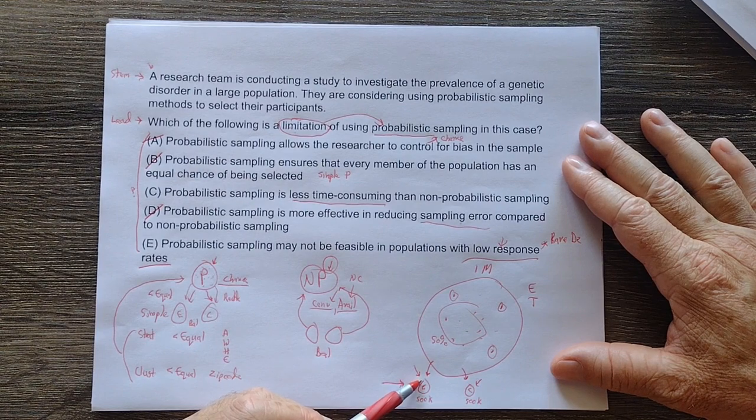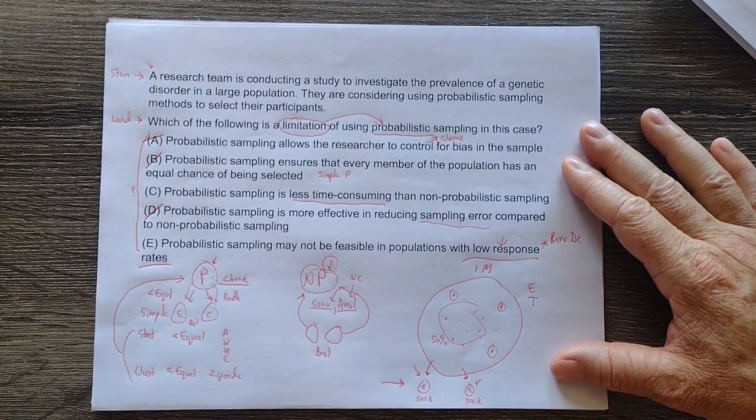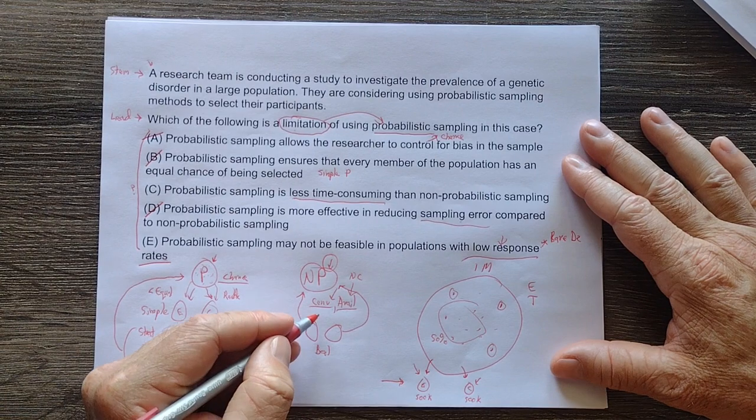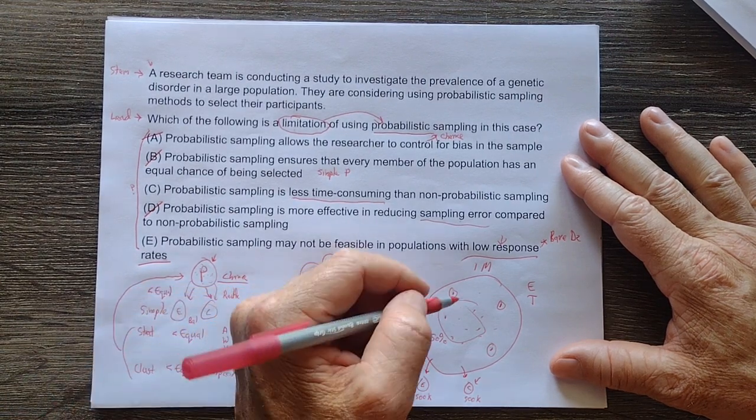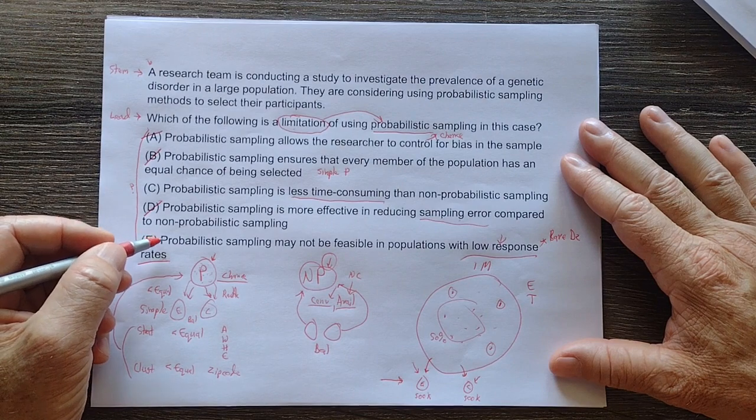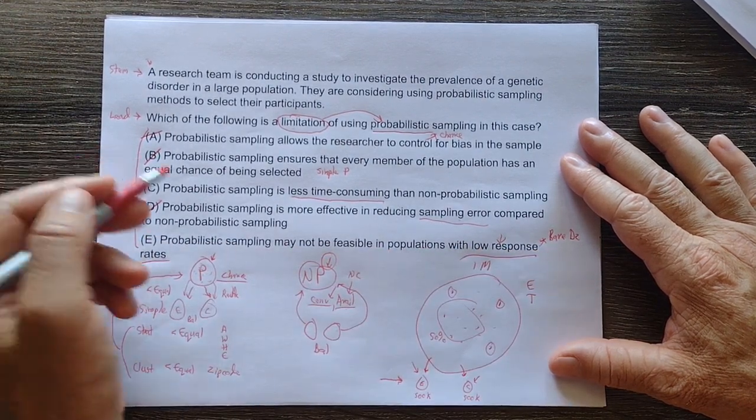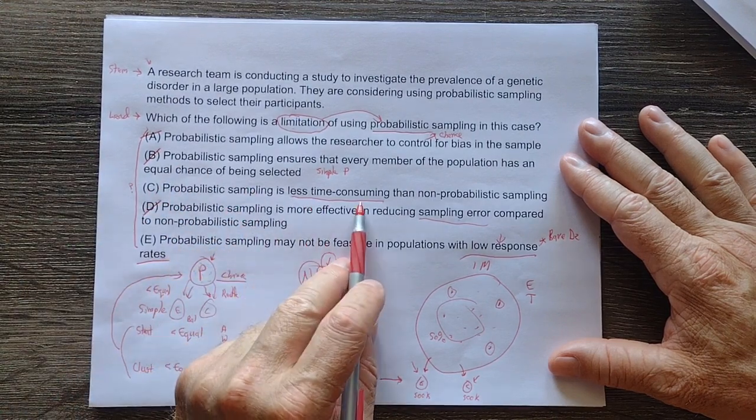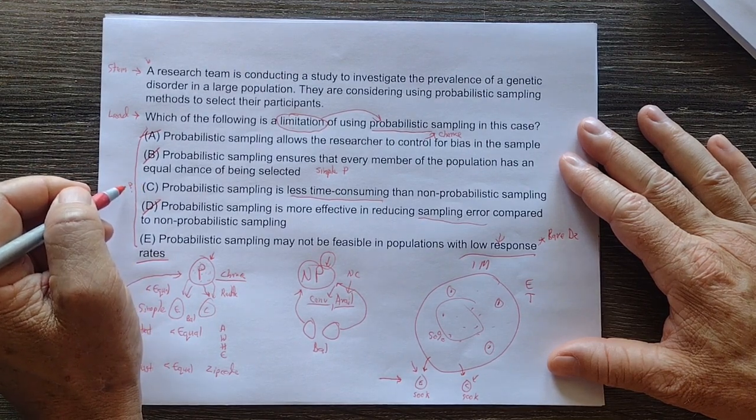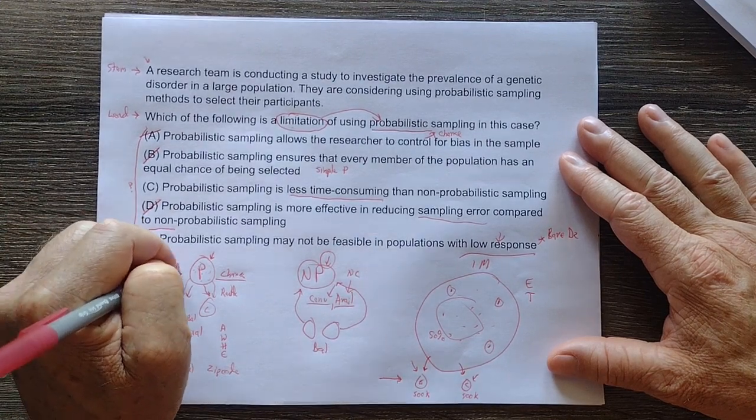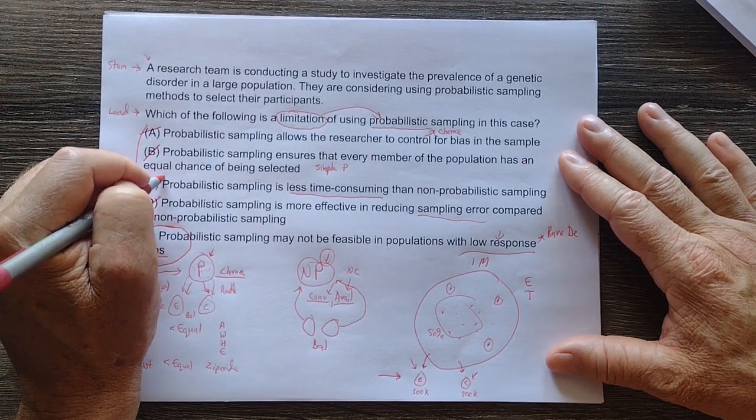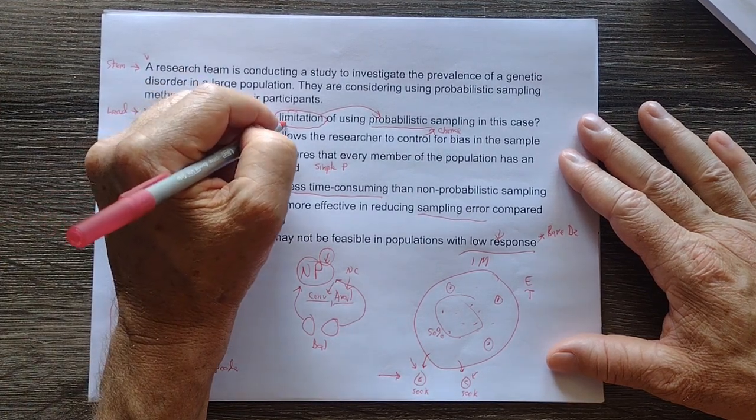So that would be more like maybe a clustering or some, not, sorry, not clustering. I don't want to confuse you with probabilistic. But that might be more like a case control type study, or we would then describe that we are choosing people that have the disease to make sure they get in there, right? So probabilistic falls apart in these kind of rare situations. Now let's go back to probabilistic sampling being less time-consuming. Well, that is not always true. Sometimes it's true, but it's not always true. So I really think what they're trying to get at is I really think they're trying to get at E being the most correct answer. And this is not incorrect, but I don't think it is always, I don't think in this situation is the most correct as far as the limitation.